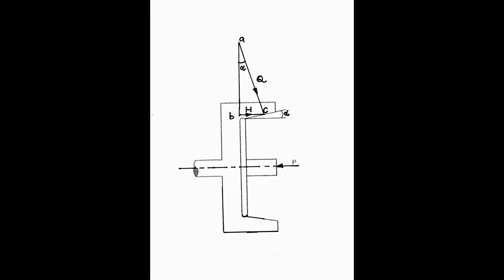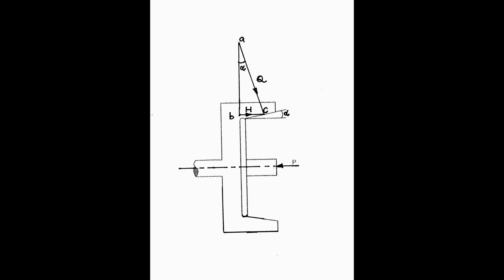So H is equal to P, and we find the relationship between Q and H in the form: Q is equal to H divided by sin(alpha). It is the relationship between the perpendicular and hypotenuse, so Q = H / sin(alpha).